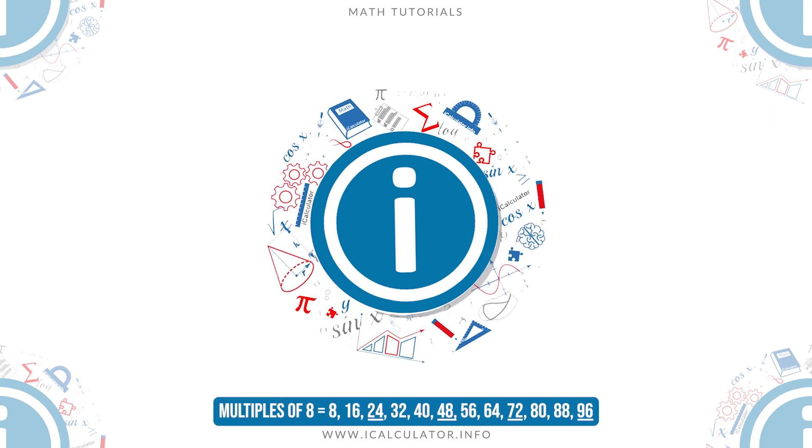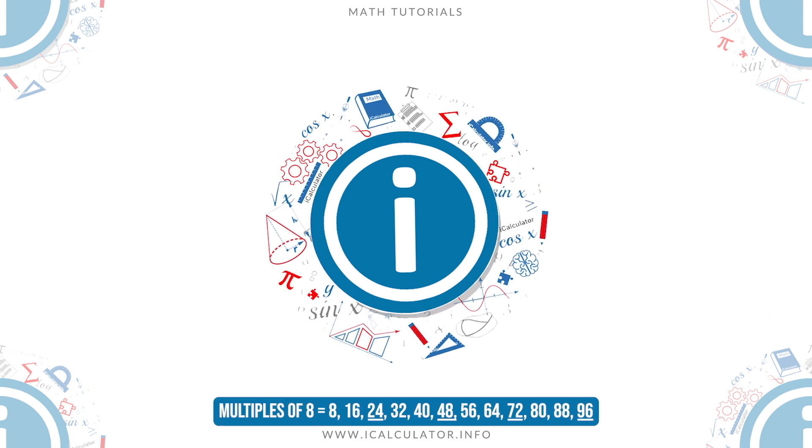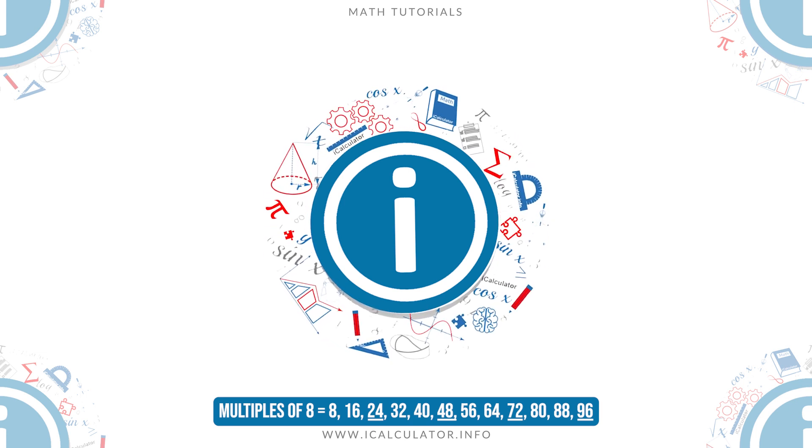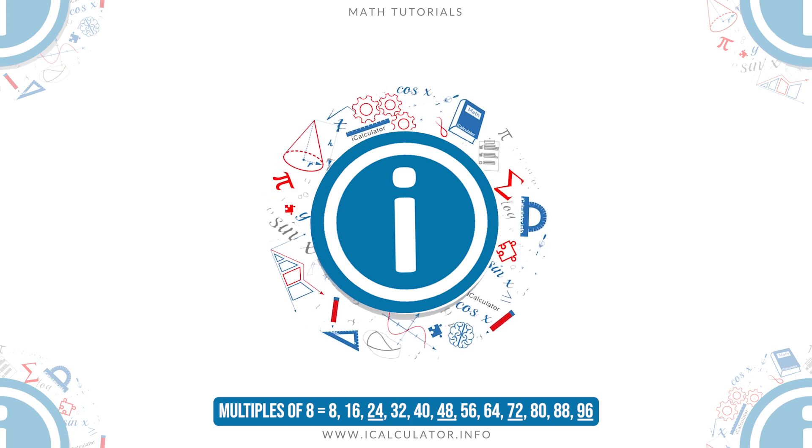Multiples of 8 is equal to 8, 16, 24, 32, 40, 48, 56, 64, 72, 80, 88, 96.